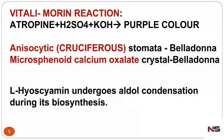The Vitalimorine reaction is the atropine-specific identification test. In this reaction, the substance is treated with potassium hydroxide in the presence of sulfuric acid. If a purple color is produced, it confirms the presence of atropine. This is an important identification test — remember: Vitalimorine reaction gives purple color for atropine.